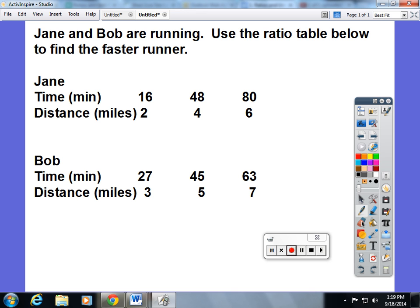Use the ratio table below to find the faster runner. Right now if I look at the table, it's comparing times to distances. The first thing I would like you to do is see if any of the numbers from the top table match the bottom. None of them do, so that means we can't compare them the way they are right now.